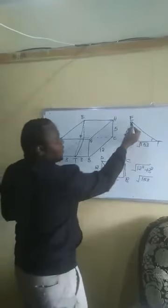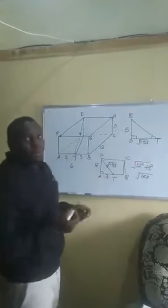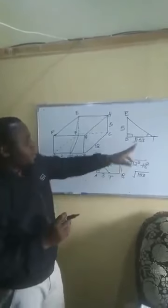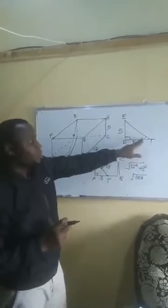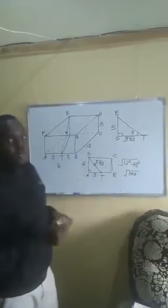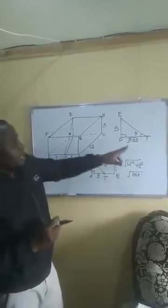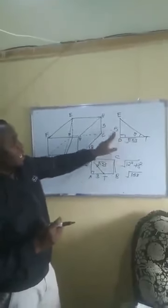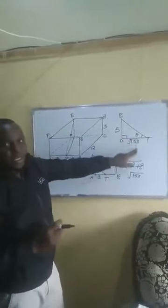The angle we are looking for is angle ETD. In relation to angle theta, DE is opposite and DT is adjacent. For those who use SOHCAHTOA, that gives us cosine. The cosine of theta is equal to opposite 5 over adjacent √153.